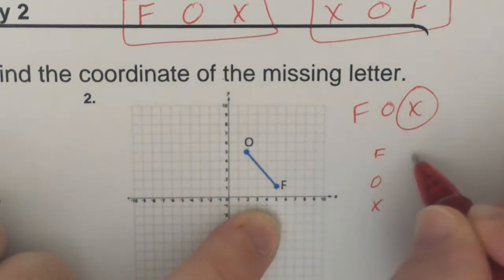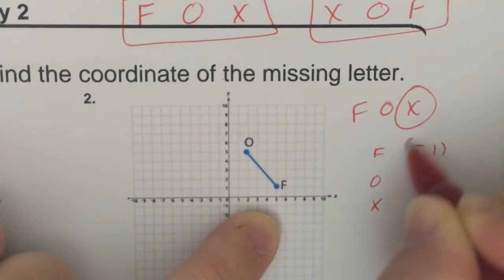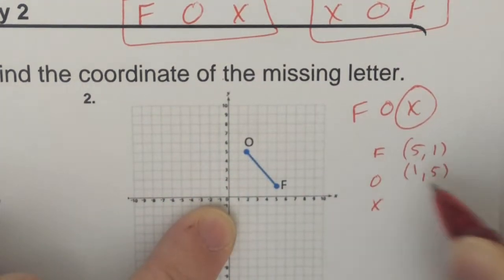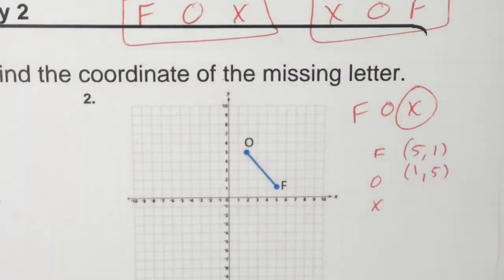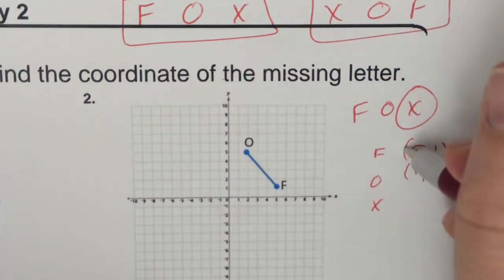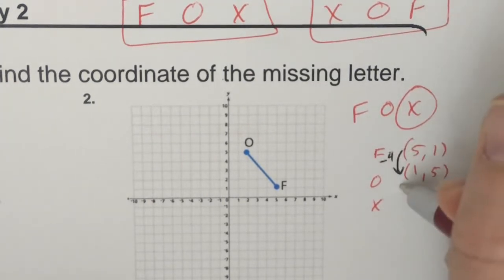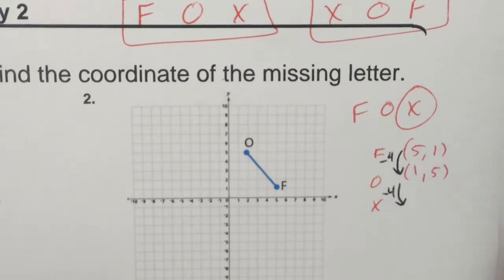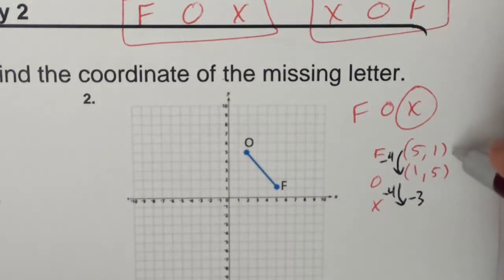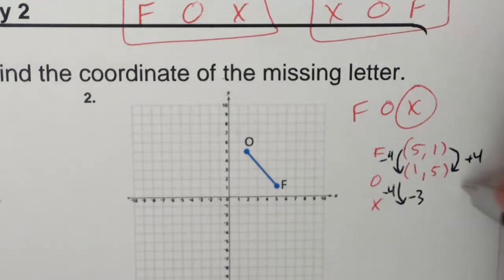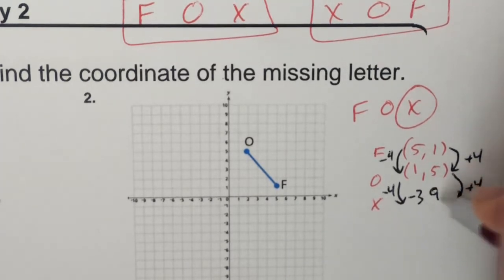F was at 5, 1. O was at 1, 5. So we just continue the pattern. How did I get from 5 to 1? I subtracted 4. So subtract 4 again — we land at negative 3. How do we get from 1 to 5? We added 4. So add 4 again, and we land at 9.